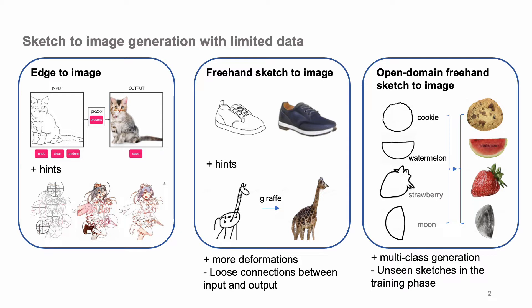This paper aims to handle sketch-to-image generation with limited data. Due to the difficulty in annotation, it is not easy to collect massive sketch data, so early works use edges as substitution. However, compared with edges, freehand sketches have more deformations, and there are loose connections between input sketches and output images. In this work, we explore open domain freehand sketch-to-image generation, where the model can generate multiple classes of objects even if it has never seen such a sketch category during training.